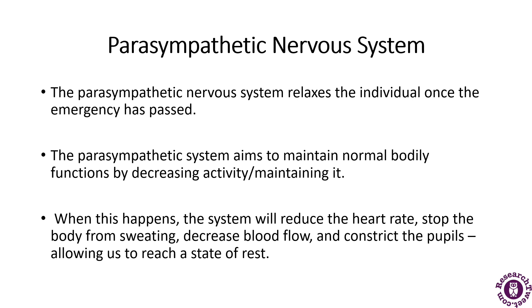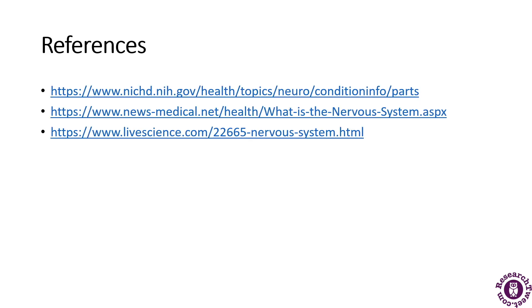The parasympathetic nervous system is the opposite of the sympathetic nervous system. It relaxes the individual once the emergency has passed. When a threatening situation has ended, this system helps the person relax by maintaining normal bodily functions — it decreases activity, reduces the heart rate, stops the body from sweating, and decreases blood flow. It basically relaxes a person after they have faced a threatening situation. This concludes the overview of the human neural system.